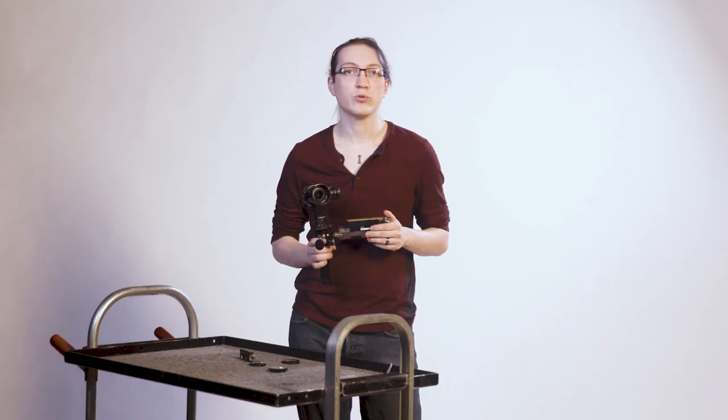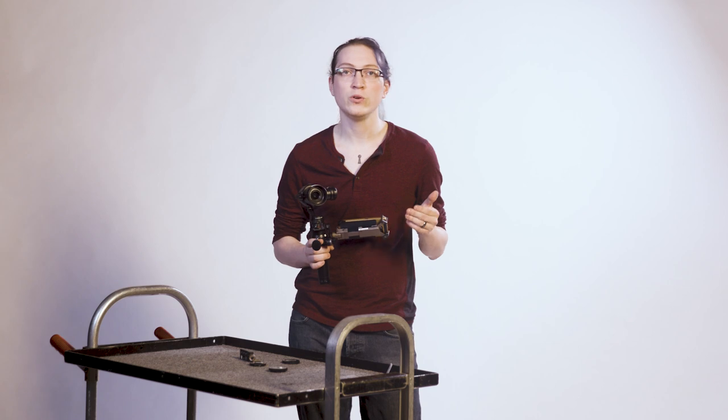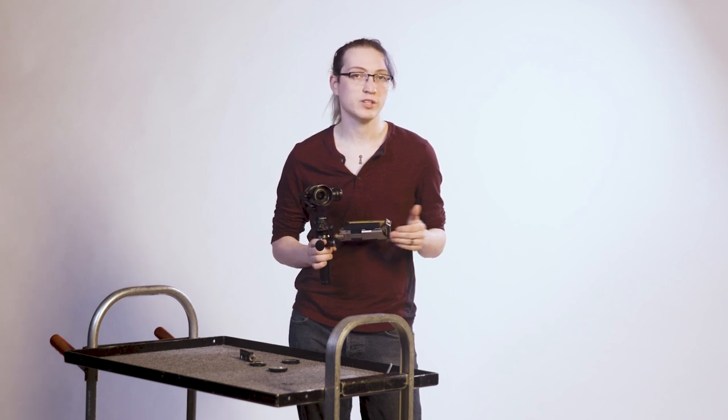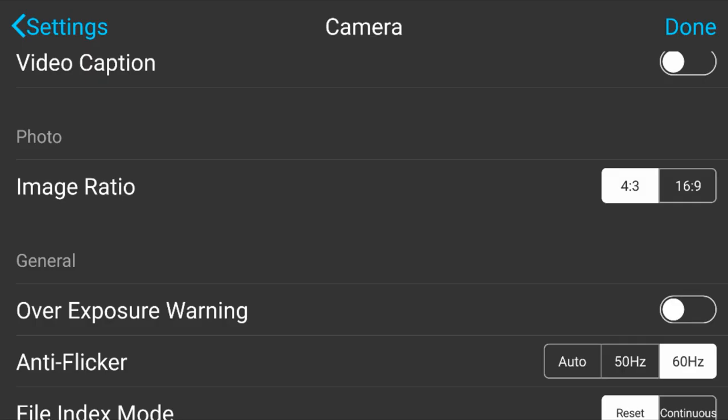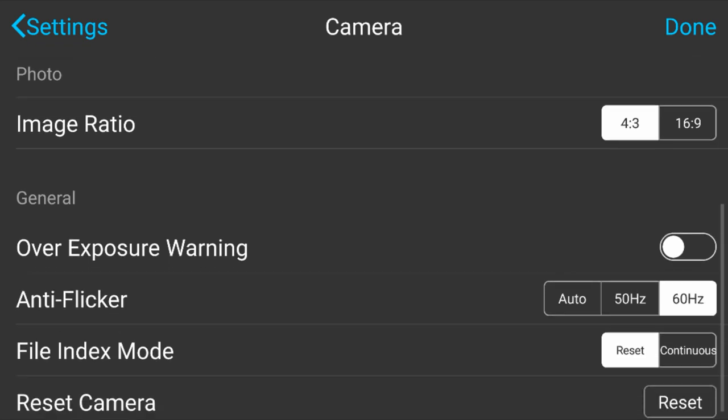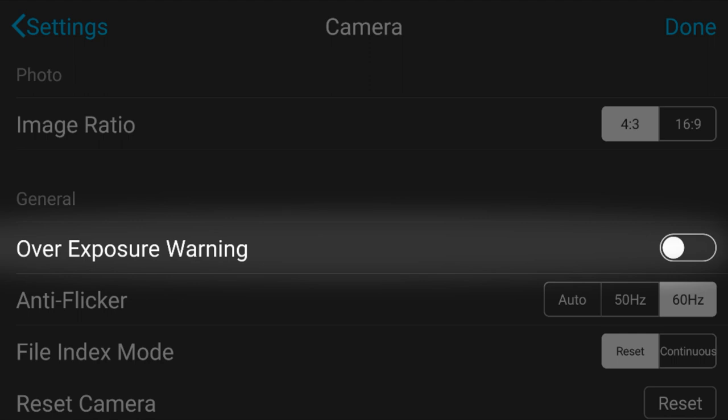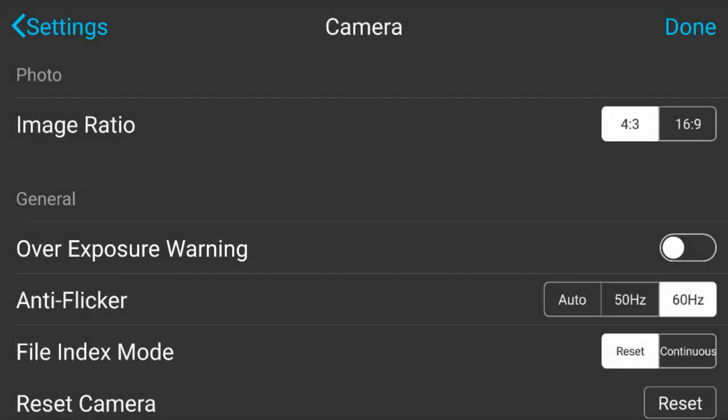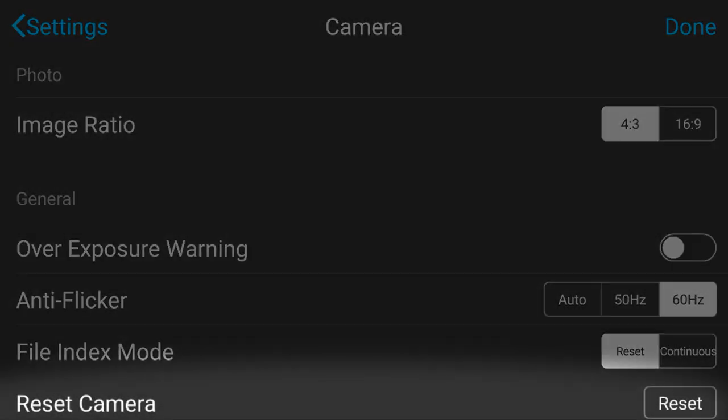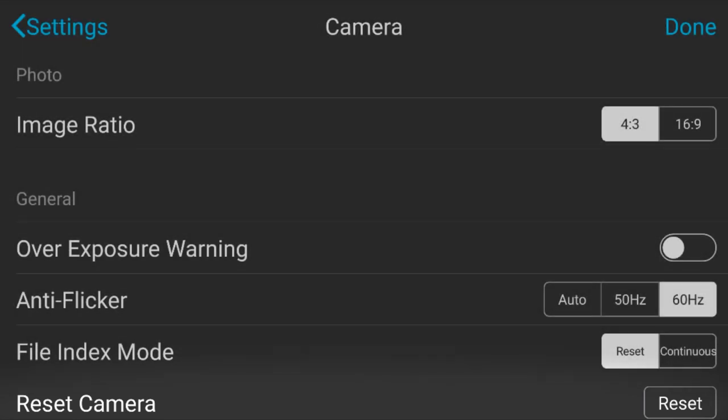Timelapse format will allow you to record timelapses as either video or still images and video simultaneously. Further down, you will see general. Here you can turn on overexposure warning, which will cover the overexposed areas in frame in zebras. You will also be able to hard reset the camera with the reset button at the bottom.